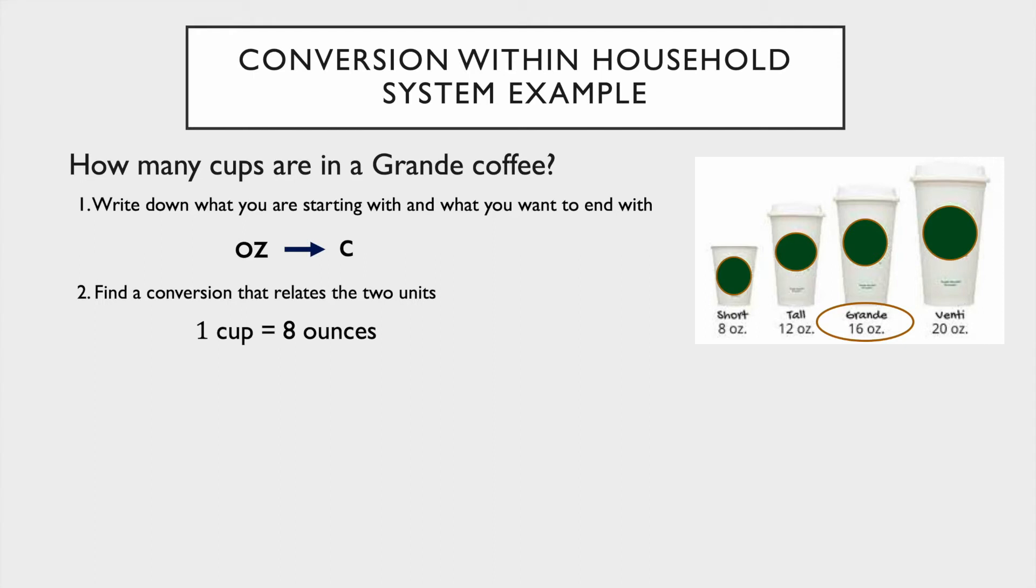Now that we have our conversion, we're going to start with what we know and make sure our undesired units cancel out. Our first fraction here is starting with what we know. We know we have 16 ounces and I'm just going to put this over one.